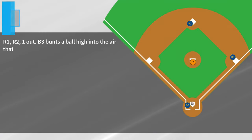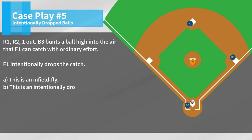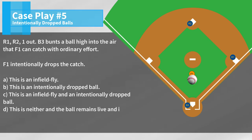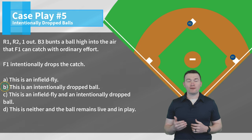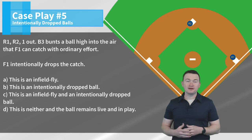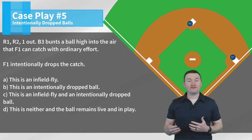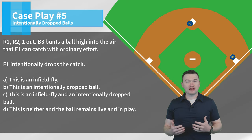Case play number five. R1, R2, one out. B3 bunts a ball high into the air that F1 can catch with ordinary effort. F1 intentionally drops the catch. Is this: A) this is an infield fly; B) this is an intentionally dropped ball; C) this is an infield fly and an intentionally dropped ball; or D) this is neither and the ball remains live and in play. The correct answer is B — this is an intentionally dropped ball. Just like the play previously, an infield fly cannot be a line drive and it also cannot be a bunt. However, for an intentionally dropped ball, any ball in flight including a line drive or a bunt could qualify for that rule, and that's what we're going to enforce.